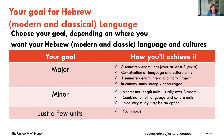Another thing I want to cover is your choice of degree. You have three options: you can take Hebrew as a major, a minor, or just a few units. A major includes eight semester-length units over at least three years, and contains a combination of language and culture units as well as an interdisciplinary project. We also offer in-country study, which we strongly recommend for improving your language usage and cultural experience. For Hebrew, we suggest you go to Israel and study at the Hebrew University, Tel Aviv University, or another institution.